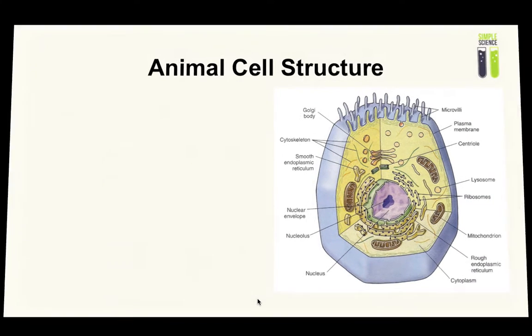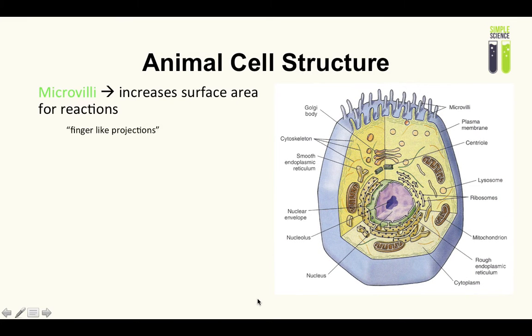We have microvilli up next, which are these fuzzy little things that you see here. The microvilli's function is the same as the cristae's function. It increases surface area for reactions and they're known as finger-like projections. The increased surface area therefore increases efficiency. For example, if this cell were to line your gut, it would have more microvilli so that more food can be absorbed.